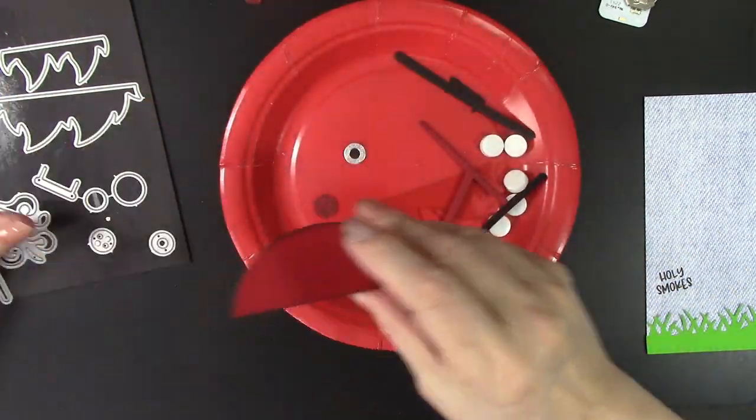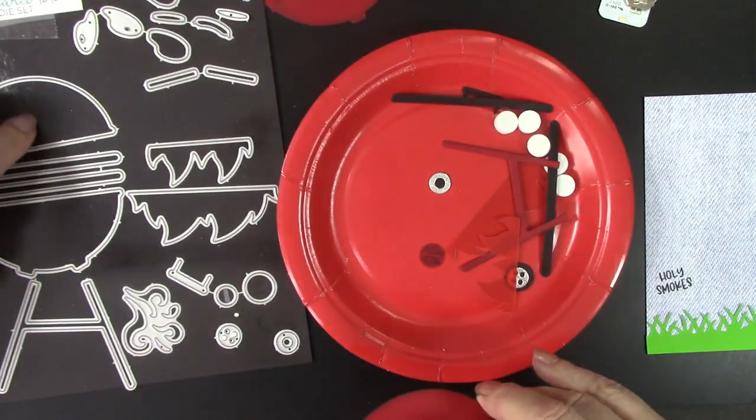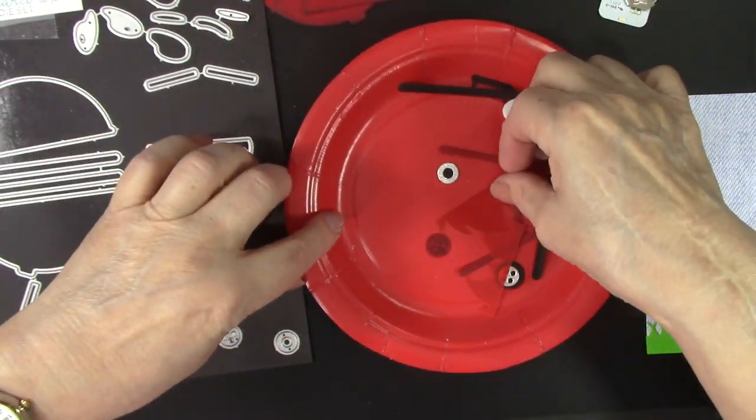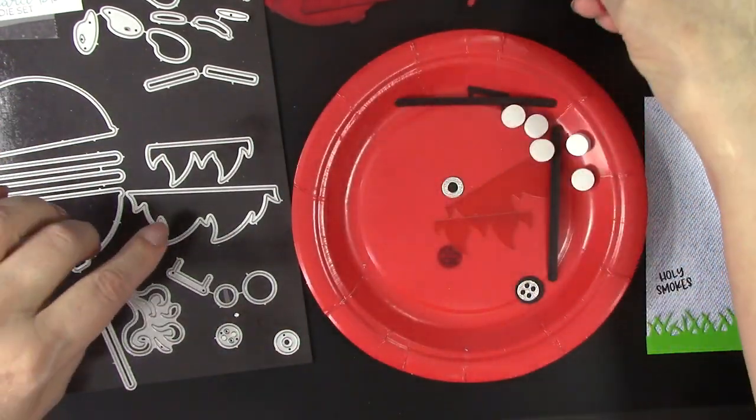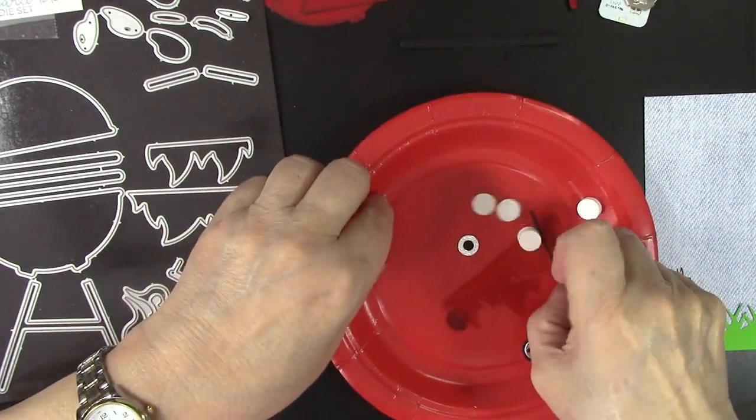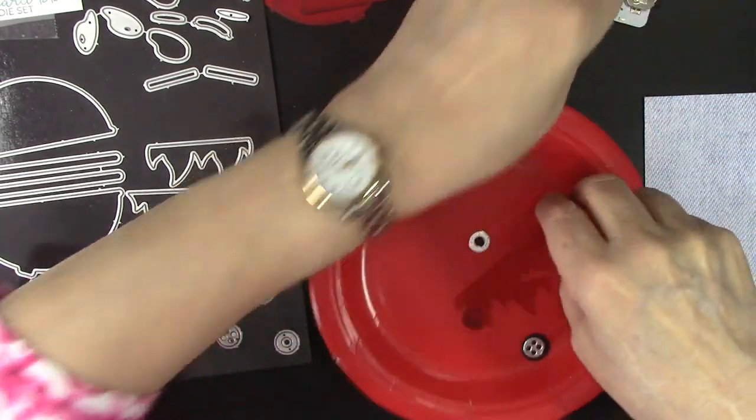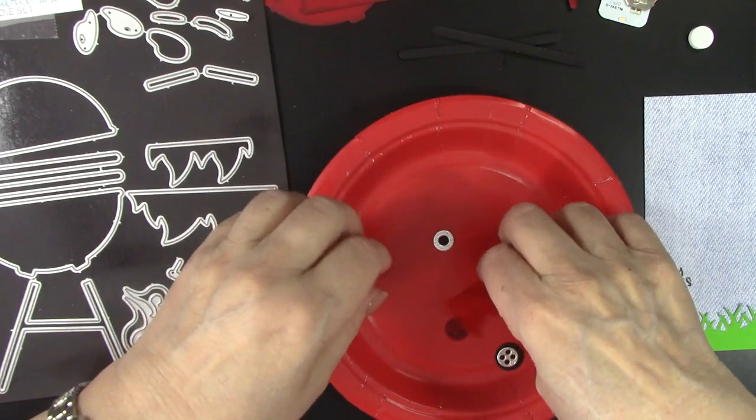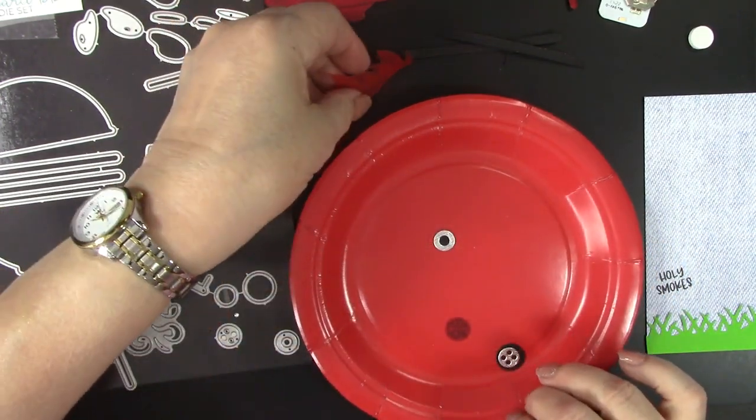Then there is a cover that I cut out. I don't know if you can see the die set here. Cover. And then there are the legs. And then there's some trim pieces that we're going to put on. And I have some pop dots ready to go.